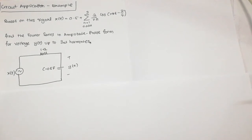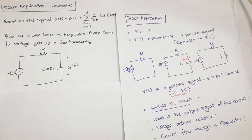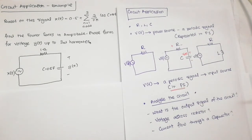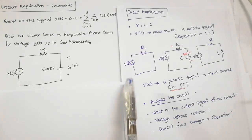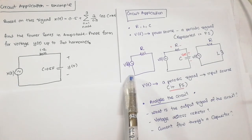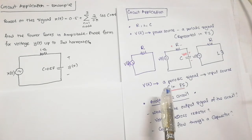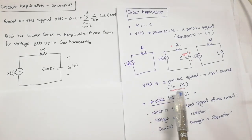Assalamualaikum warahmatullahi wabarakatuh and good morning to everyone. In this video, we will do the second example of circuit application in Fourier series. As you can remember, for circuit application, you have a circuit consisting of a resistor, inductor and capacitor, which is RLC. You have an input source to the circuit which is a periodic signal represented in Fourier series form.